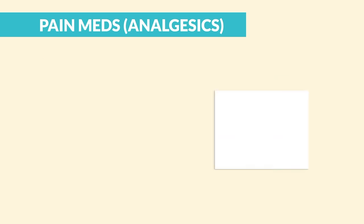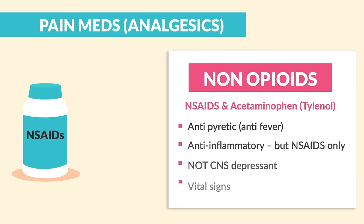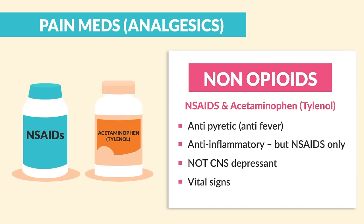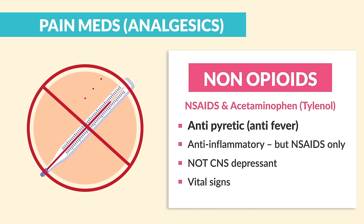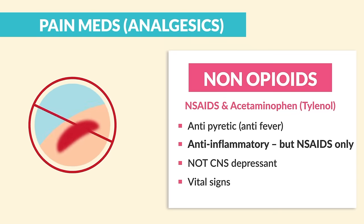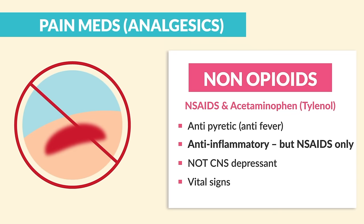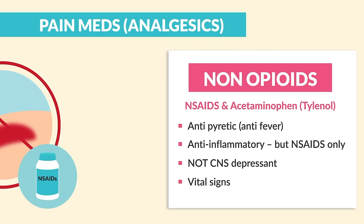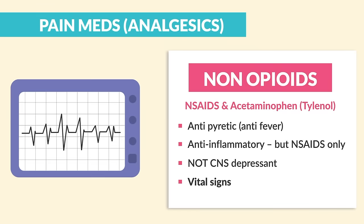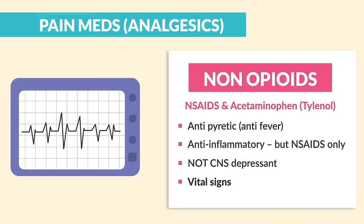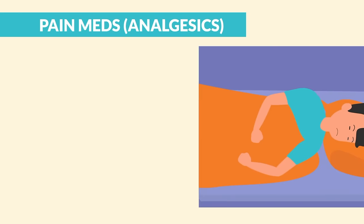For non-opioids, we have NSAIDs and acetaminophen — brand name Tylenol. Both have antipyretic, or anti-fever, effects, and the anti-inflammatory effects are only with the NSAIDs. It's not a CNS depressant, so the vital signs are not low and slow.